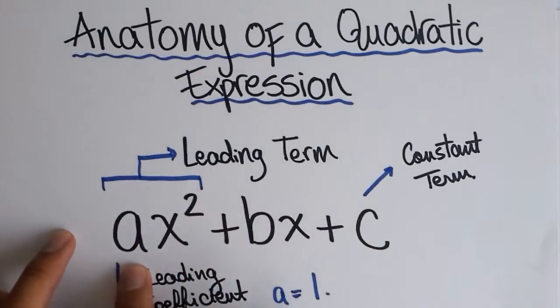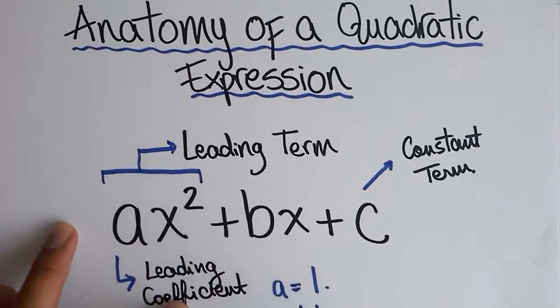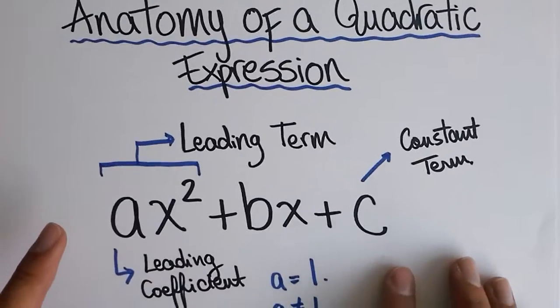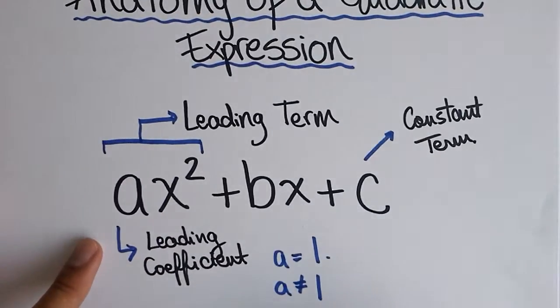Furthermore, the number that accompanies the x squared we call it the leading coefficient. This name is important because there are two special cases. One, when a is equal to one and is the topic of this tutorial. Later on we will be checking the second case, that is when a is different from one.